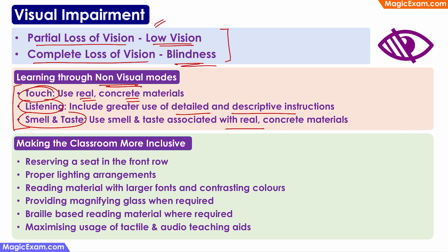How can we make the classroom more inclusive for children with low vision and blindness? These are some important points because very frequently you will see questions based on these points. The first is reserving a seat in the front row. If the child is blind, sitting in the front row means the child would be able to hear what the teacher is saying more clearly. And in case of a child with low vision, sitting in the front row means the child would be able to see what is being written on the board or what the teacher is showing.